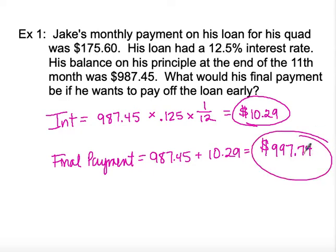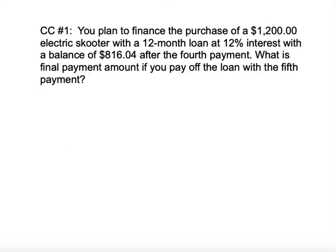His final payment on the loan will be $997.74. That will result in a cost savings of all the interest he has yet to pay on the remaining balance of the loan. Now I'm going to look at concept check one from the book. If you want to pause the video and try this on your own and come back to check your work, that would make sure you're completing these problems correctly.